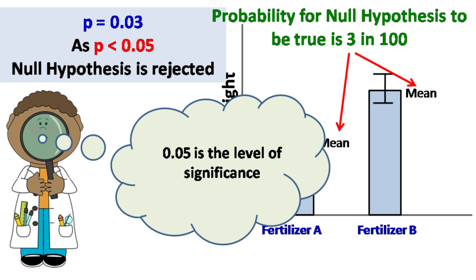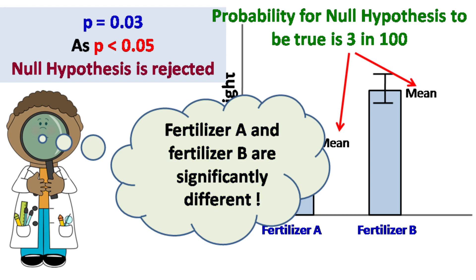In this case, the researcher has to reject the null hypothesis and conclude that there is a significant difference between fertilizer A and fertilizer B.